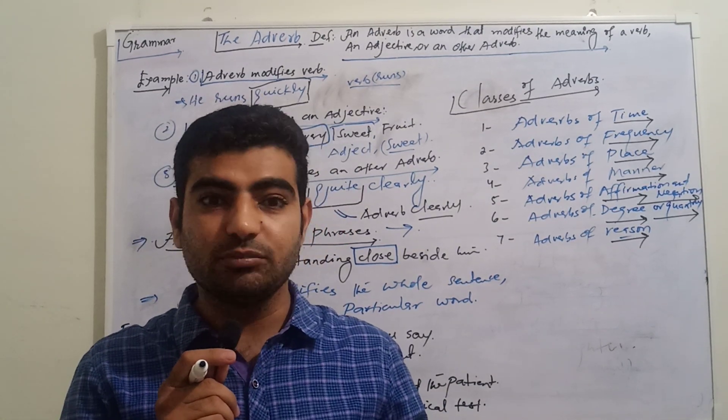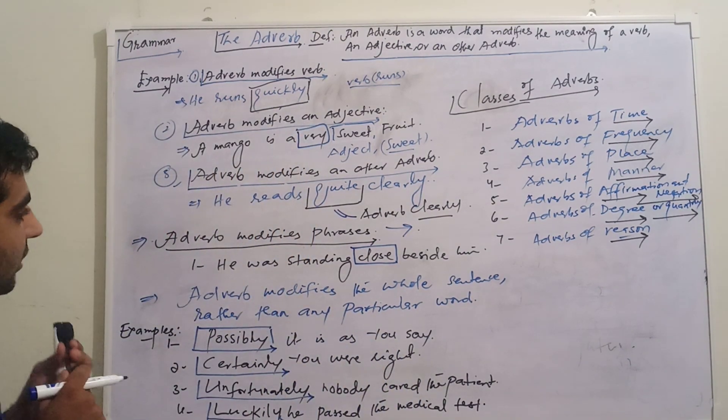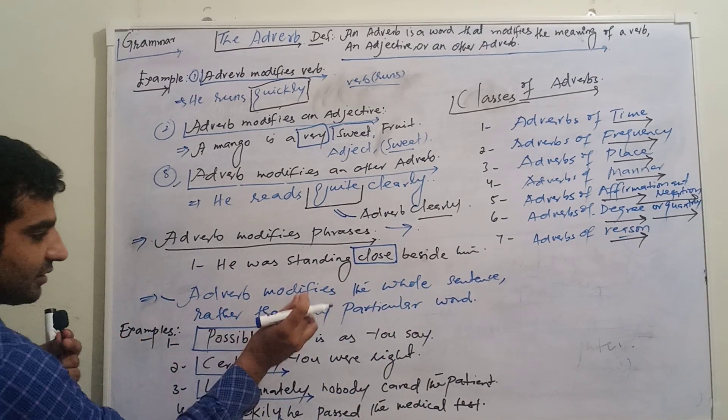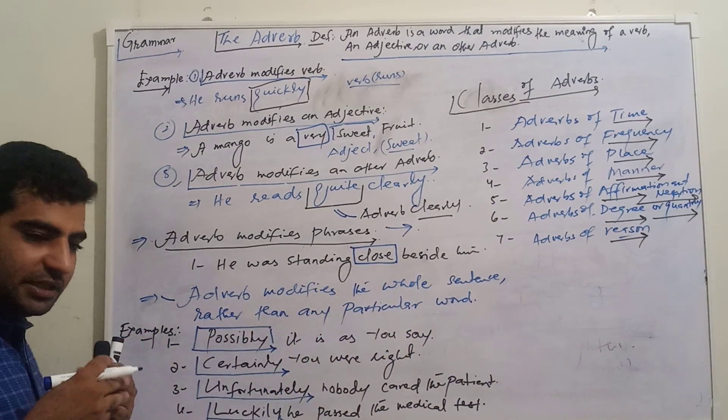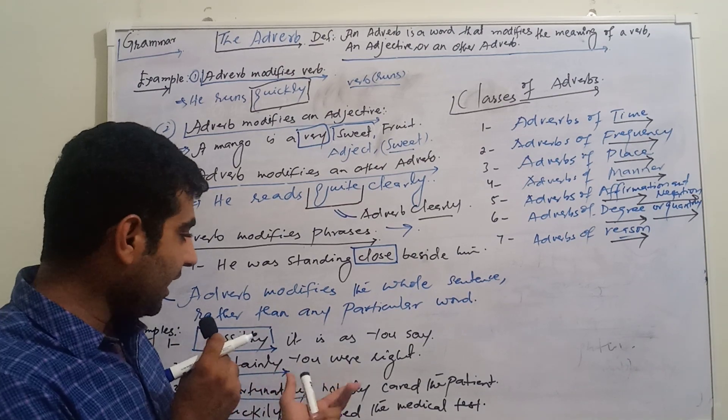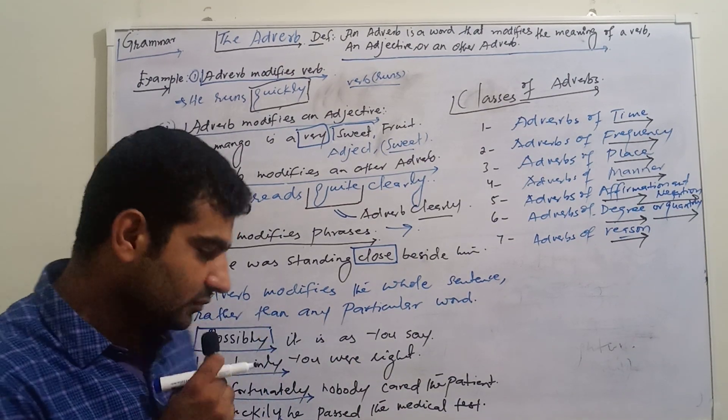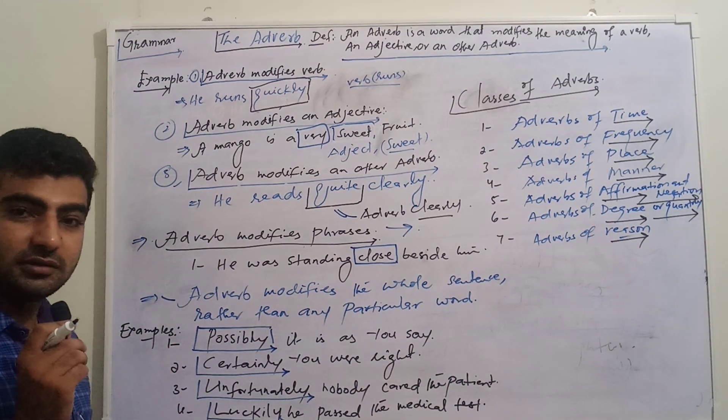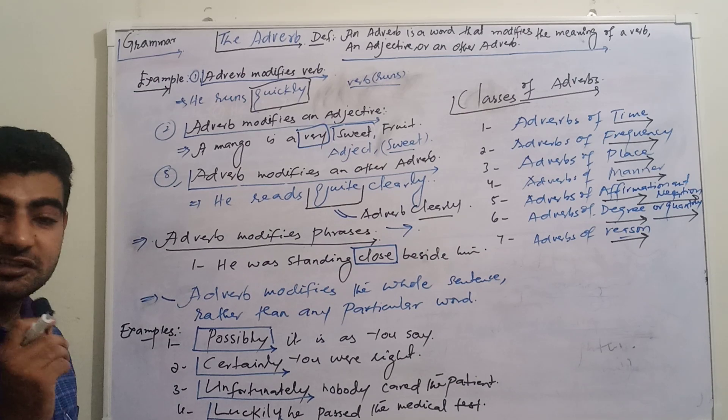Adverb modifies the whole sentence rather than one particular word. We can understand: possibly - possibly it is as you say. We can use certainly - you are right, certainly you are wrong, certainly he's guilty.